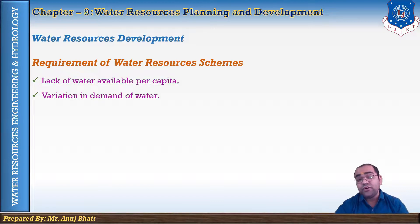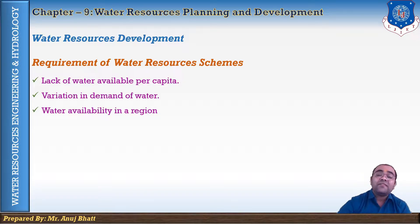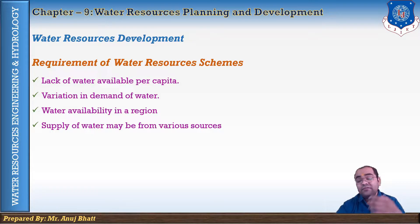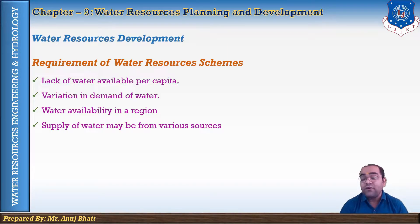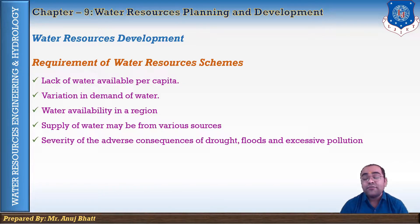Water availability in a region — whether a country, state, or watershed — is not equally distributed. Supply may come from rain, surface water bodies, or groundwater. This variation in availability and supply requires proper management and distribution of water to supply it efficiently. Additionally, the severity of adverse consequences such as drought, flood, and excessive pollution also leads us to proper management of water resources.